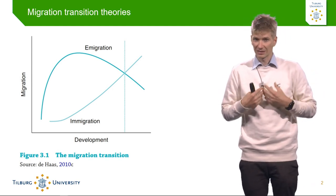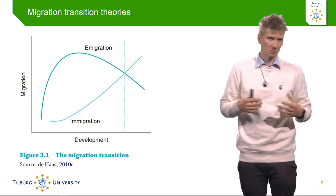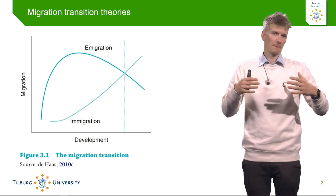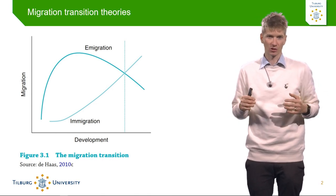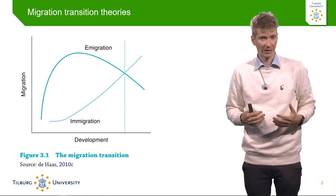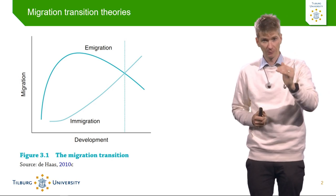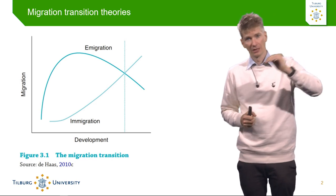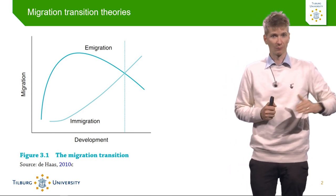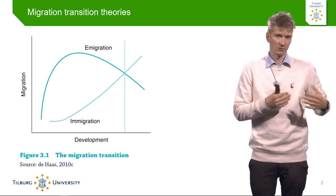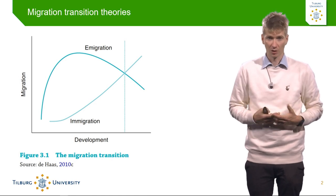Migration transition theories are also reacting against the popular idea in politics and in the news that if you send development aid to countries of origin, that will curb international migration. What we actually see in the figure is that this won't happen, because the more a country develops, the more people will eventually migrate until a certain tipping point, when a country is sufficiently developed and emigration will go down. With immigration, we also see that poorly developed countries do not attract a lot of immigration, while the more a country gets developed, the more migration flows towards it as well.